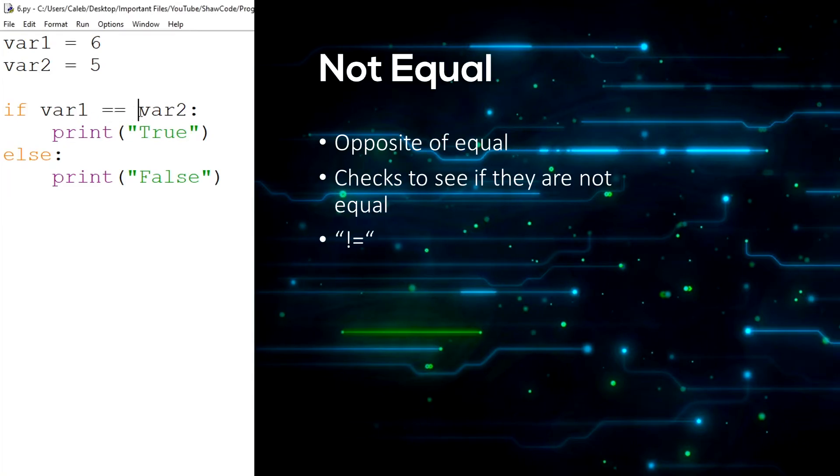Then there's also not equal, which is exclamation mark and then equals. So if var1 is not equal to var2, print true, else print false. Let's run it and we can see we get true because var1, which is 6, does not equal var2. Not equal is basically just the opposite of equal.